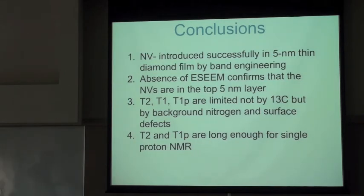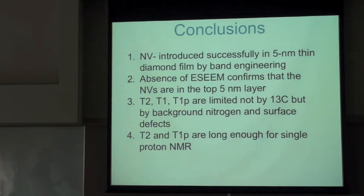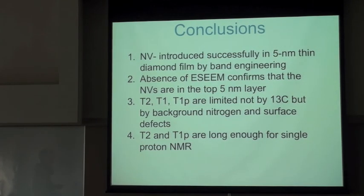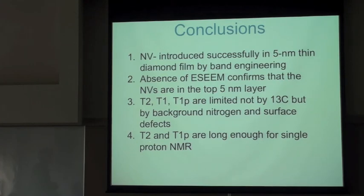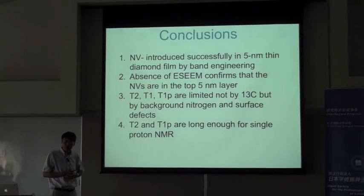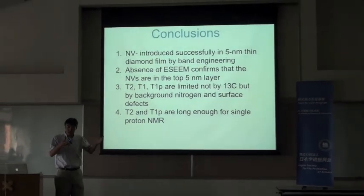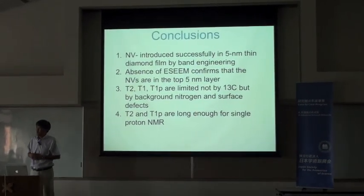To conclude: NV minus centers are introduced successfully in a 5-nanometer thin diamond film by band engineering, and the absence of carbon-13 oscillation in spin echo confirms that the NVs are in the top 5-nanometer layer. T2, T1, and T1 rho are limited not by carbon-13 but by background nitrogen and surface defects, most likely. However, T1 and T1 rho are long enough for single proton NMR detection, and I think we are well on our way to achieve such a goal. Thank you so much for your attention.